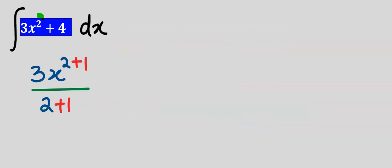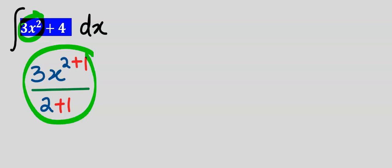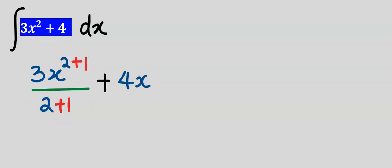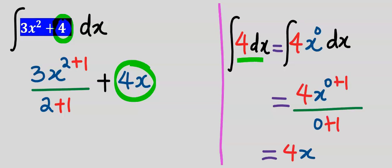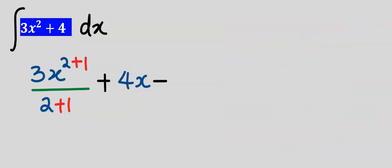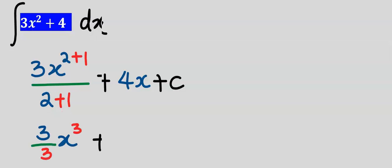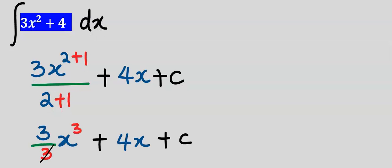When we integrate this we are going to get the result shown, and when we integrate 4 we are going to get 4x. Remember, integrating just 4 is the same thing as 4 multiplied by x to the power of 0, because x to the power of 0 is equal to 1. Next we include our constant plus C, and we cancel out the 3.